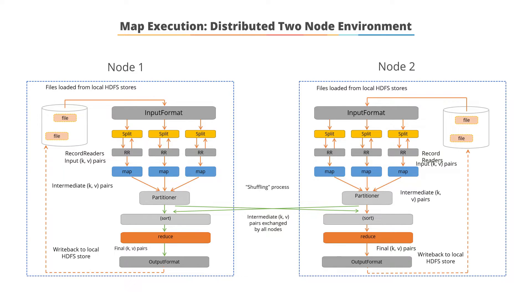Thereafter, a partitioner assigns the records to the reducer. In the shuffling phase, the intermediate key-value pairs are exchanged by all nodes.